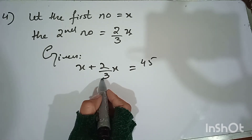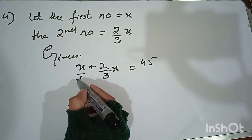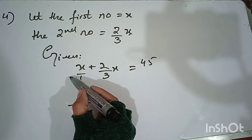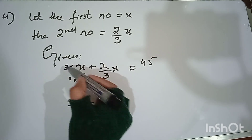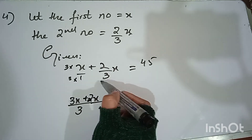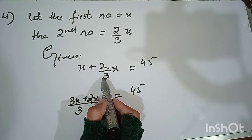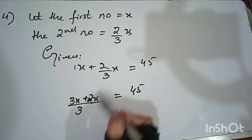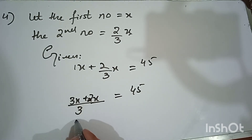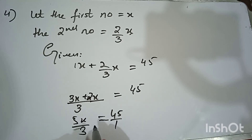To simplify, we equalize the denominators. Multiply x by 3/3 to get (3x/3). So the equation becomes (3x + 2x) / 3 = 45, which is 5x/3 = 45. Doing cross multiplication gives 5x = 135.